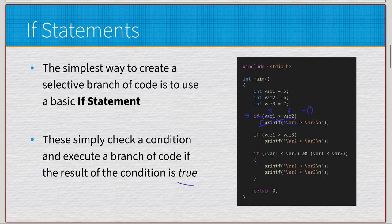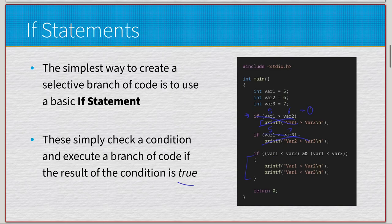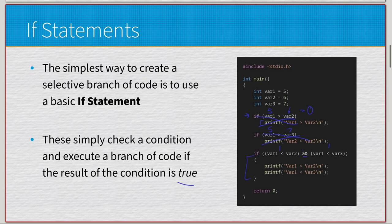Then we check if var1 is greater than var3 — 5 is not greater than 7, so that won't print either. The third is a more complex if statement with two lines in the body, so we need braces to form the block. The condition is var1 < var2 AND var1 < var3, so: 5 < 6 is true, 5 < 7 is true, and true AND true is true — so both statements inside print.